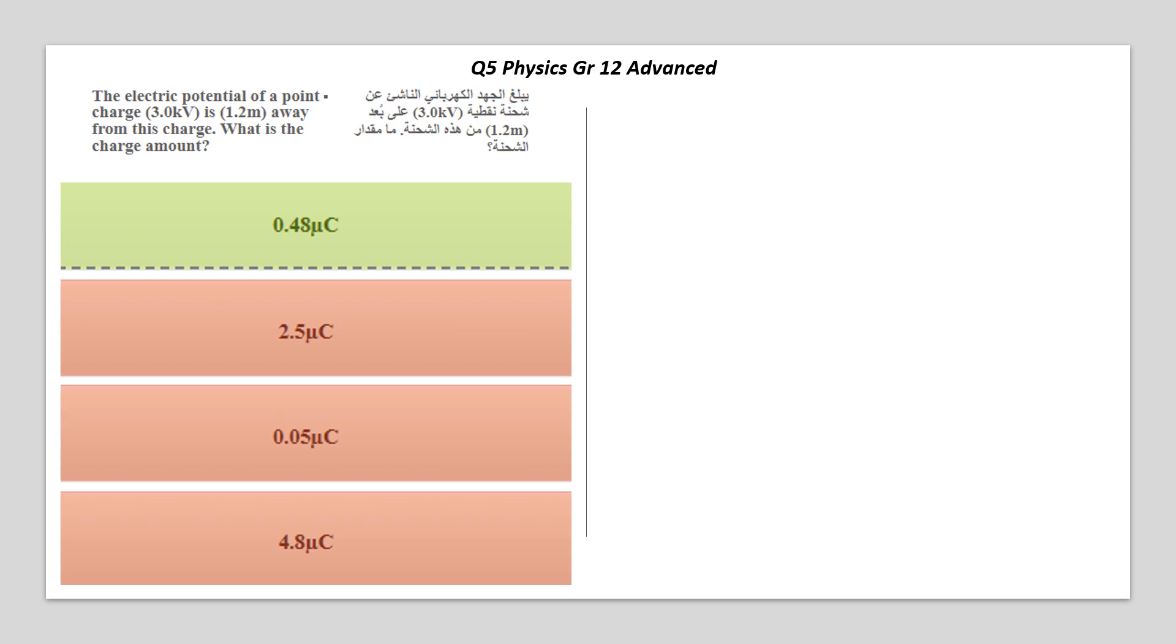Here we are at question 5 for Grade 12 Advanced. The electric potential of a point charge is 3 kilovolts at 1.2 meters away from this charge. So the question is, what is the charge amount? We're asking for the charge.